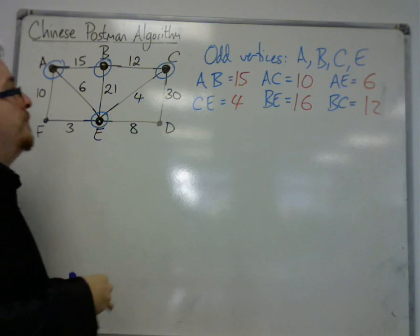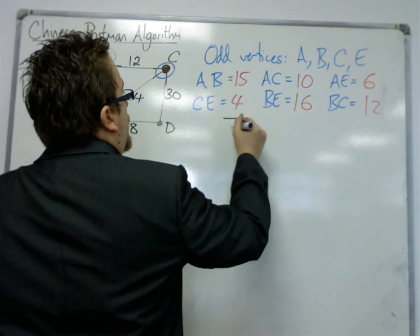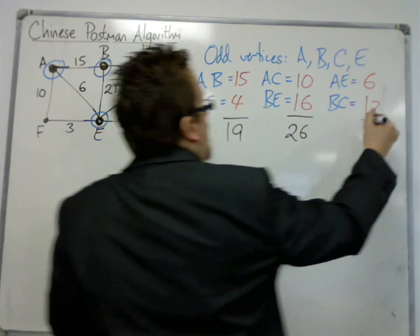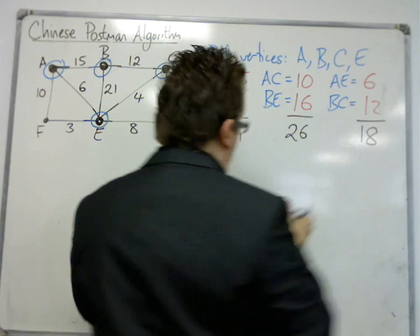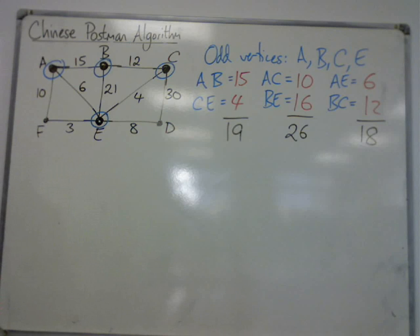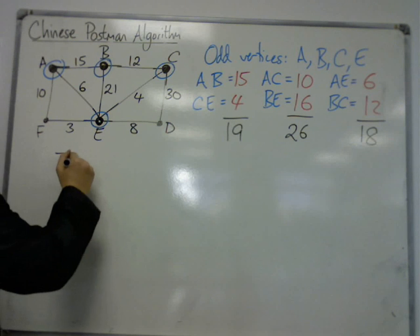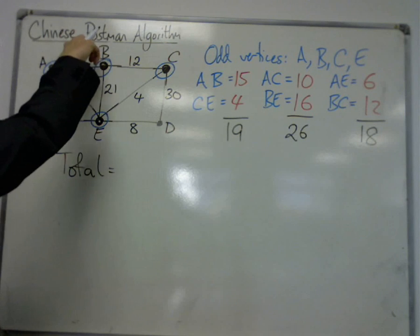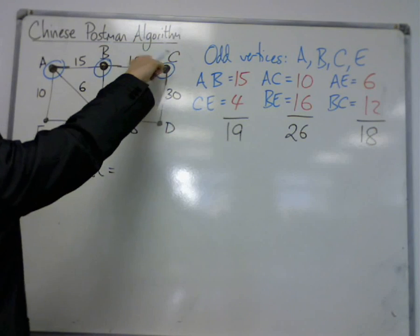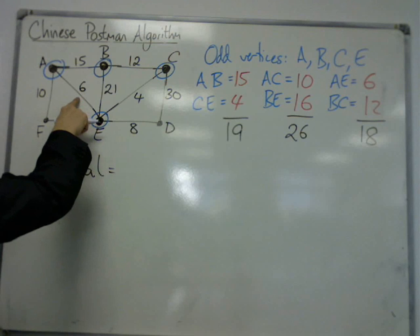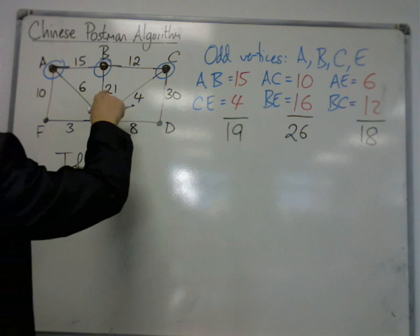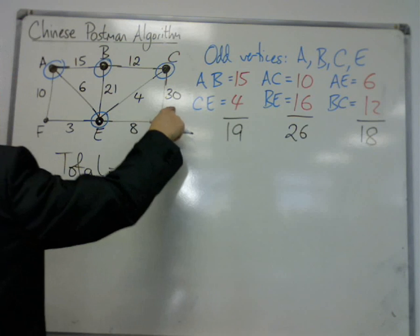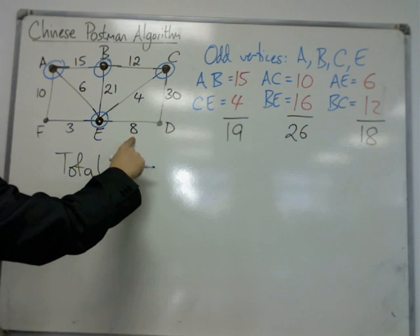So, we add these up. We've got 15 and 4 is 19, 10 and 6 is 26, and 6 and 12 is 18. Now, let's say that we're given the total already. I haven't added those up. 15 and 12 is 27, 37, 43, 64, 68, 98, 101, 109. So, the total's 109.